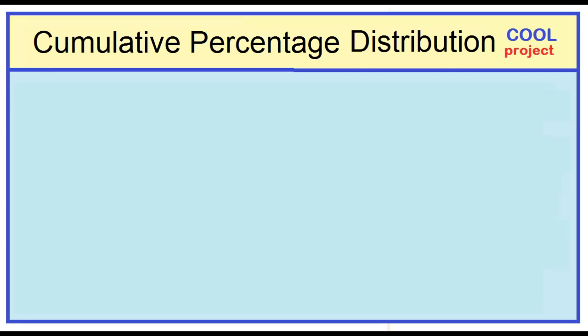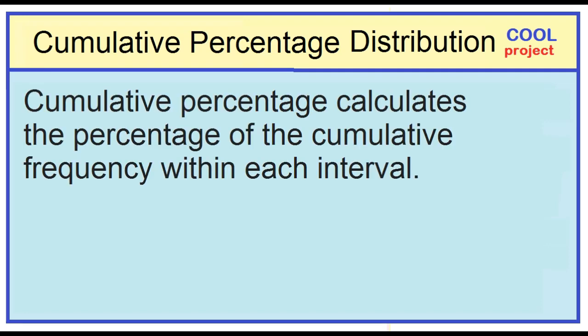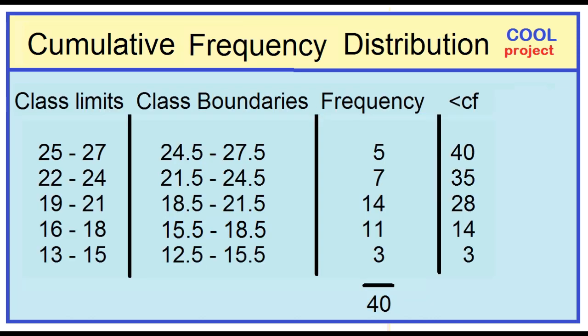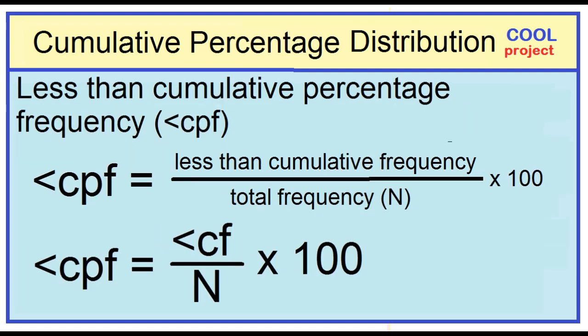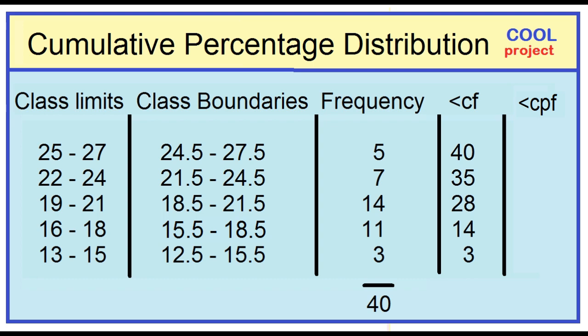Cumulative percentage calculates the percentage of the cumulative frequency within each interval. Construct a cumulative percentage distribution using this less-than cumulative frequency distribution. Less-than cumulative percentage frequency is equal to less-than cumulative frequency divided by total frequency times 100. Let's add a column for less-than cumulative percentage frequency.